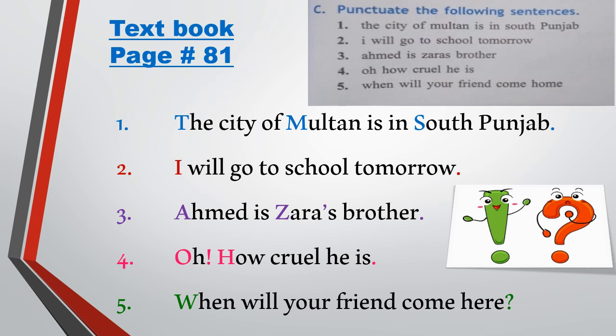The third sentence is: 'Ahmed is Zara's brother.' Ahmed is a proper noun, so the first letter A will be capital. Zara is also a proper noun, so Z is capital. We put an apostrophe to show possession — Zara's brother. And we put the full stop at the end of the sentence.